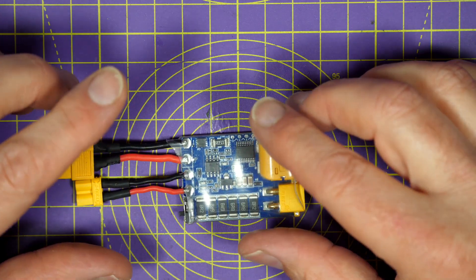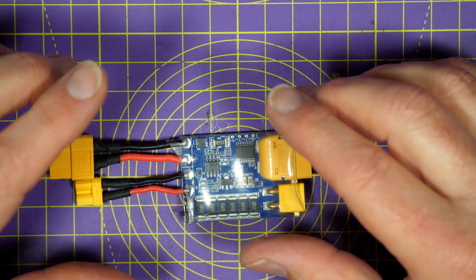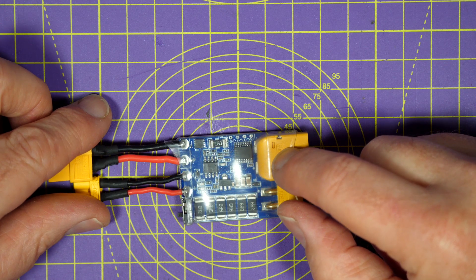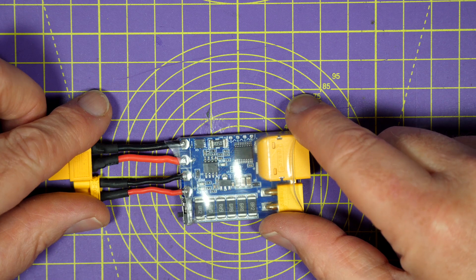In the past we've used smoke stoppers and bench power supplies to limit the risks, but now there's another option. This is the Short Saver Smart Smoke Stopper from ViFly and this is the WhirlyBloak channel.